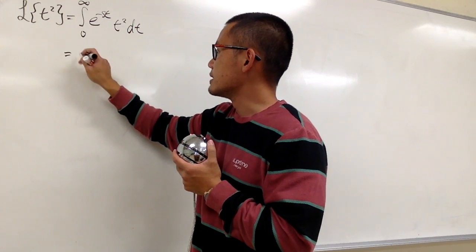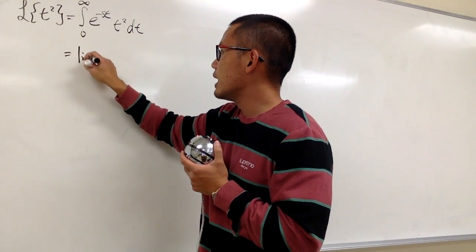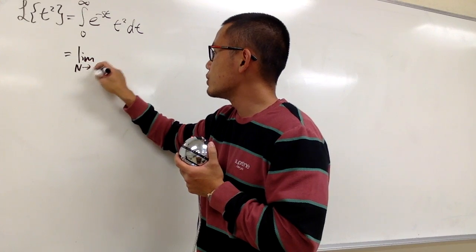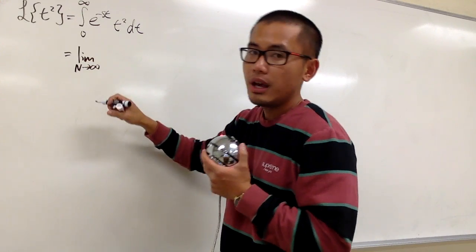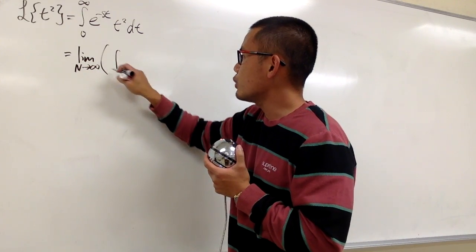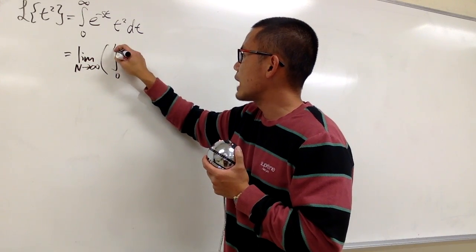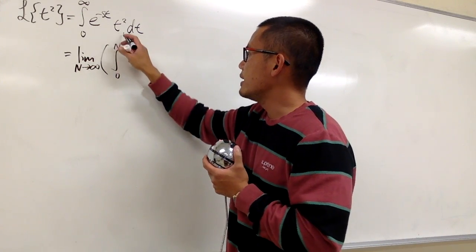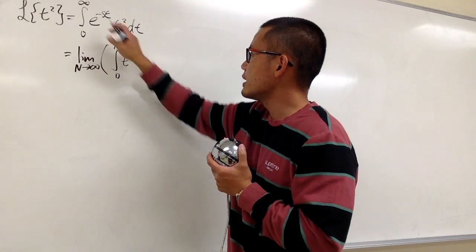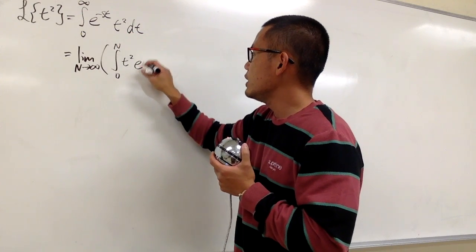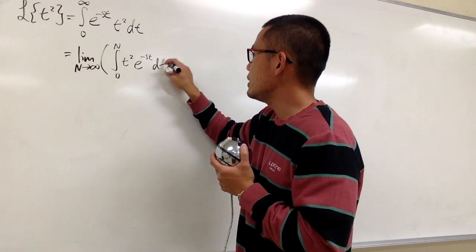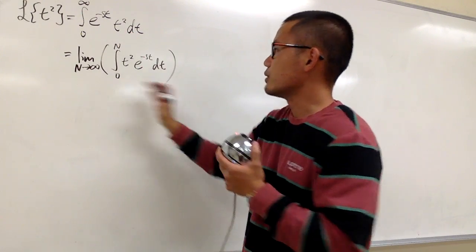Now let me put this down as the limit as capital N goes to infinity, and then we will have the integral from 0 to capital N of t squared times e to the negative st dt.